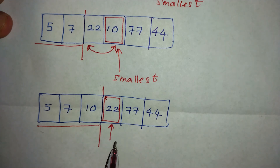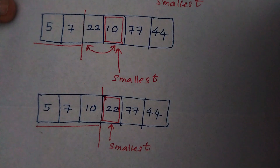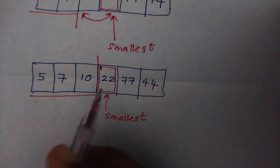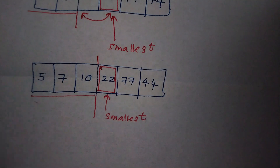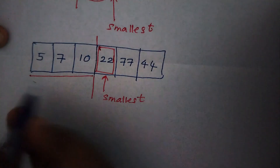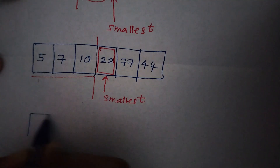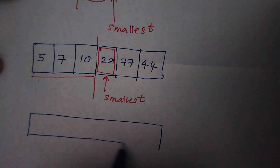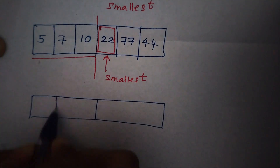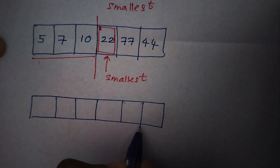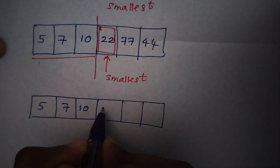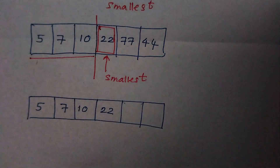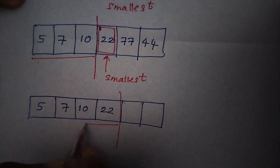Now there are two elements left: 77 and 44. From these two elements, 44 is the smallest, so we have to swap 44 with 77. You can see the left side is now fully sorted. So we simply select the smallest element and swap 44 with 77.